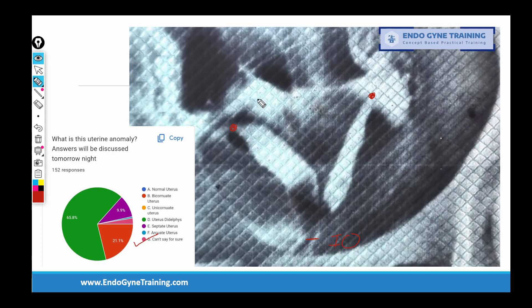In an HSG film per se, without any other diagnostic modality, it is impossible to know what is the external contour of the uterus. If this is a septate uterus, the external contour would be like this. However, if one were to argue this is a bicornuate or didelphys uterus, the external contour would be like this. But in an HSG film, it is practically impossible to tell what the external contour is. Hence, an HSG film by itself is insufficient information to tell us whether this is septate, bicornuate, or didelphic uterus.